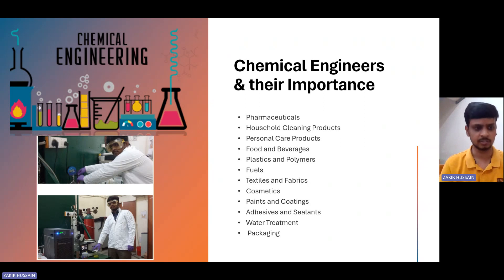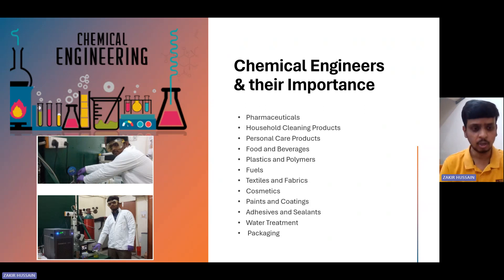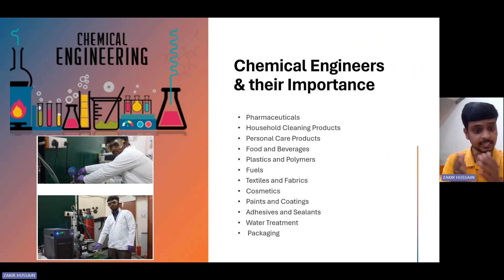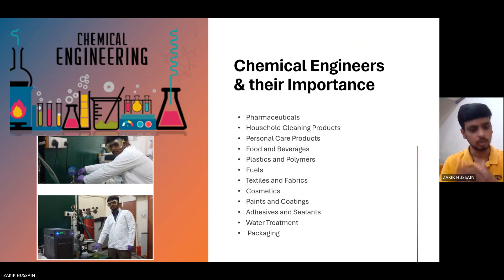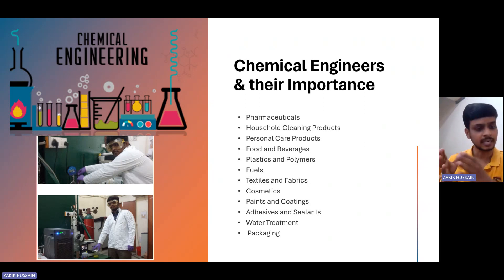Coming to household cleaning products — detergents and everything we find — these have been manufactured by trained chemical engineers. Companies like Procter and Gamble, popularly known as P&G, employ chemical engineers to develop formulations of detergents and cleansing agents. These engineers work on the optimization of mixtures of surfactants and detergents, scaling up those formulations to industrial scale. There are many stages in the scale-up process.